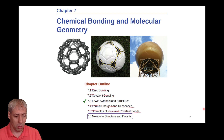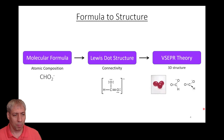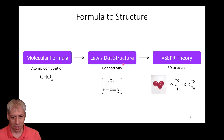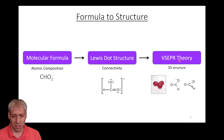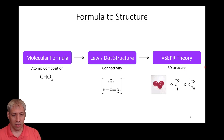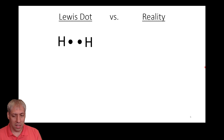In the previous lecture, we talked about taking a molecular formula, turning that into a Lewis dot structure or connectivity, and then taking the electron clouds and determining the structure using VSEPR — valence shell electron pair repulsion — to get a 3D structure. One of the main reasons we want to do that, at least in general chemistry, is we want to know about something called polarity.